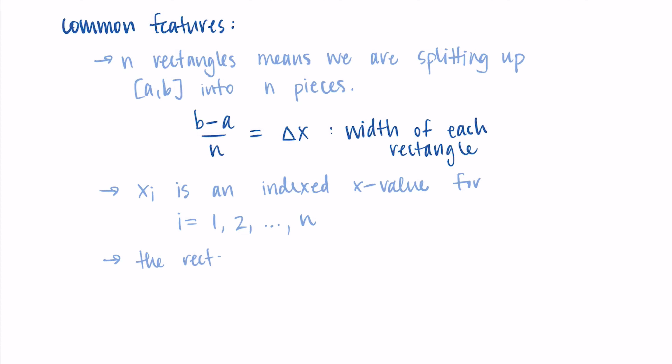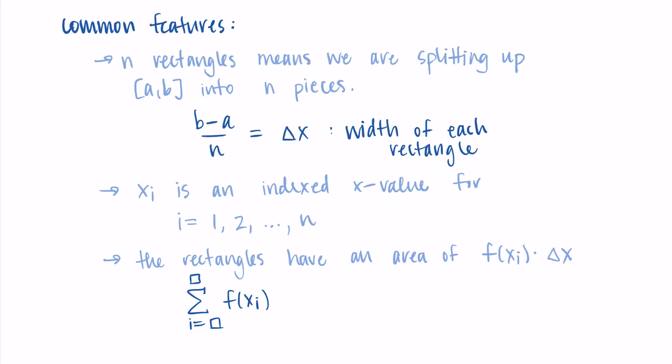Our goal is to find the areas of these rectangles and add them up. Each rectangle has a height and a width, so we sum: from i equals something up to something, of f(x_i) times Δx — height times width, summed for all rectangles. We use this sum notation especially when we have a large number of rectangles, though sometimes we only have a handful. I'll always use the sum notation so you can see how it relates to all the rectangles we're adding up.